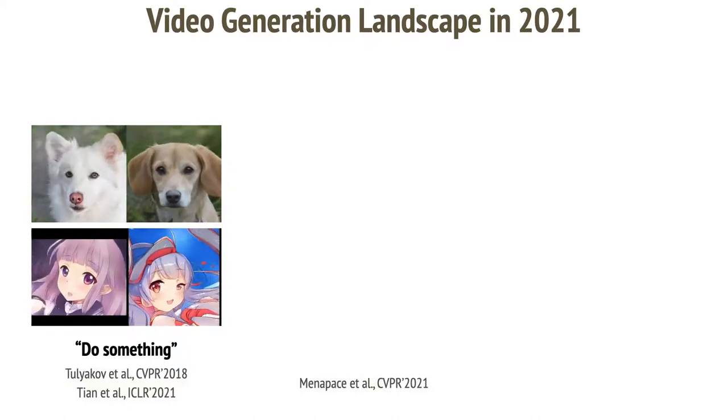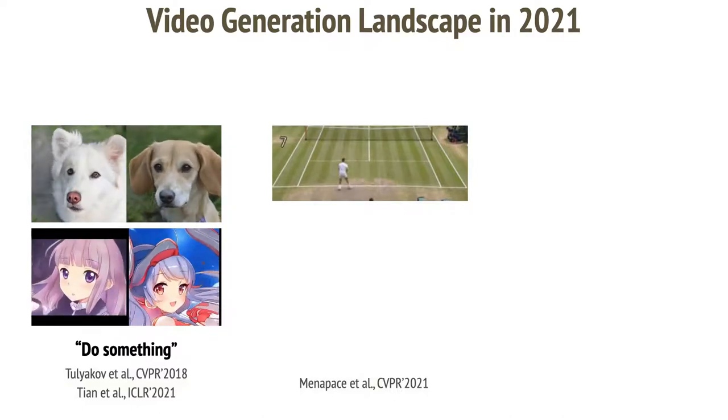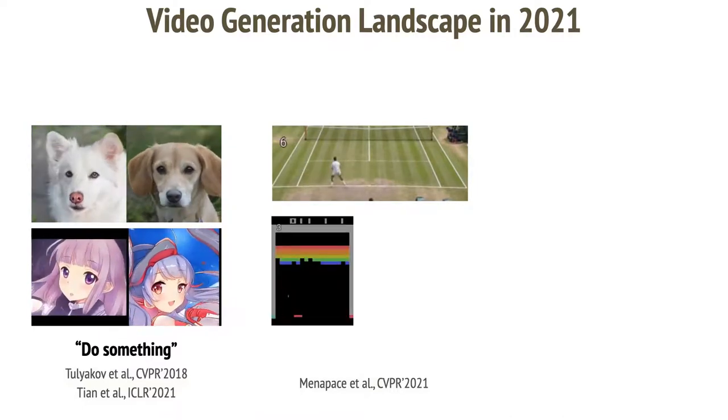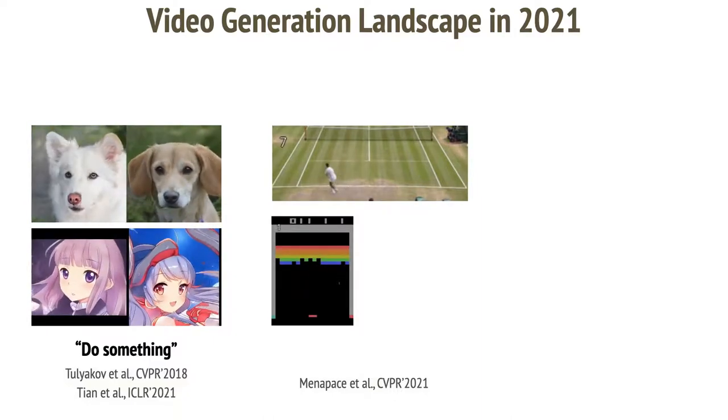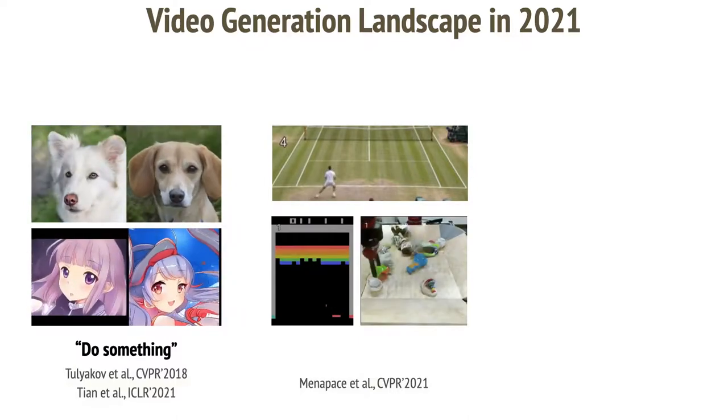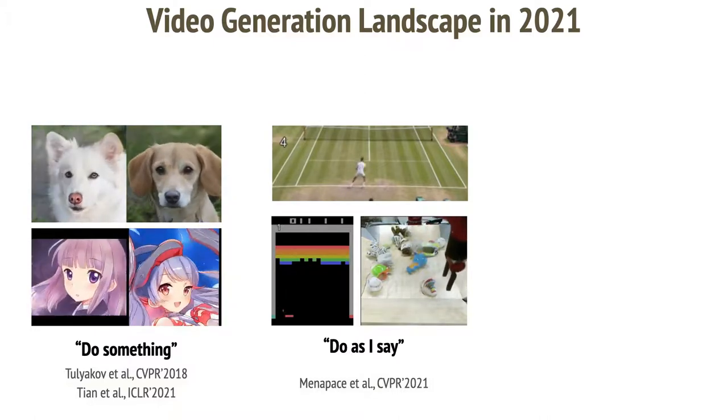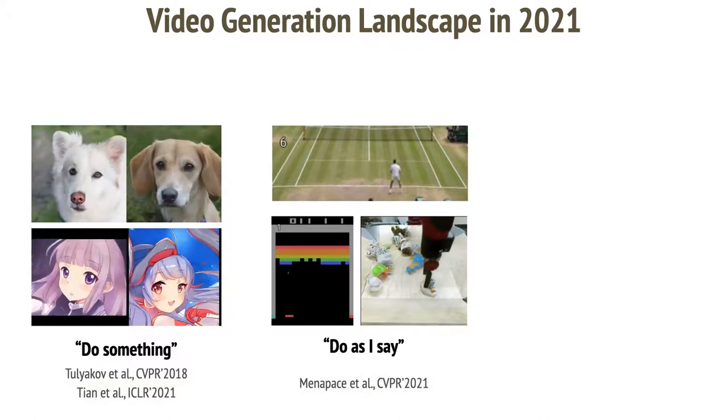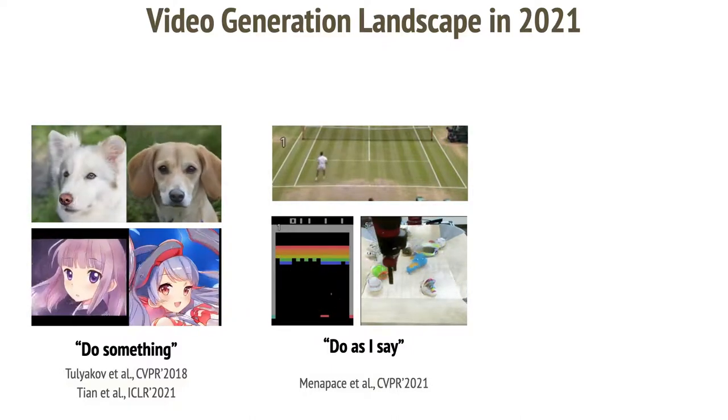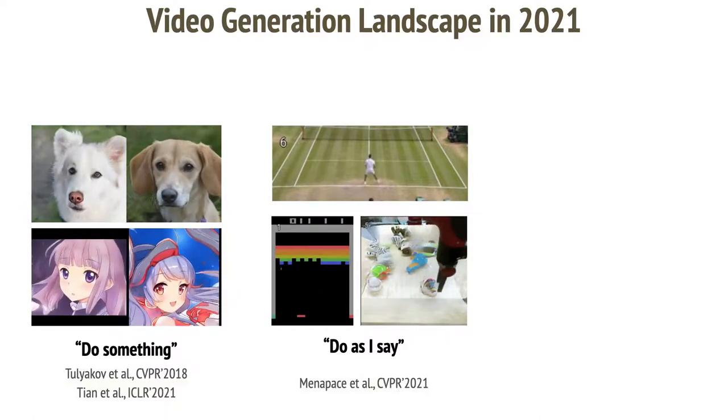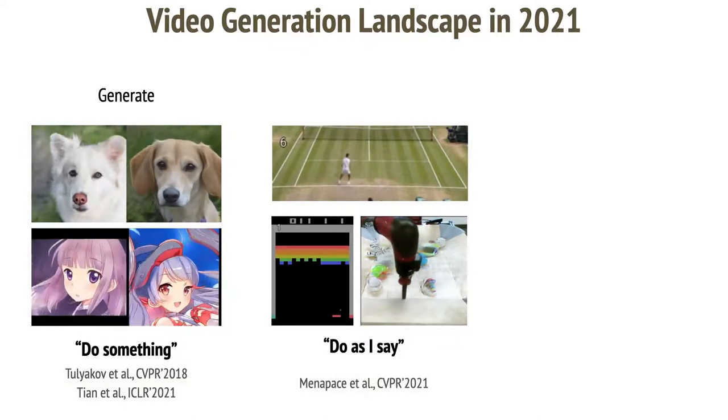In many cases, however, it is desirable to generate semantically meaningful actions. Such as in tennis, for example, we'd want the player to go left, right or hit the ball. In breakout, we'd like to move the platform left, right and similarly for the robot arm movements. In the do something approach, this is not available. A different do as I say approach is necessary and such approach allows the user to play the game. For example, by moving the tennis player, we can play tennis. By moving the platform, we can play breakout. We therefore call our approach, playable video generation.